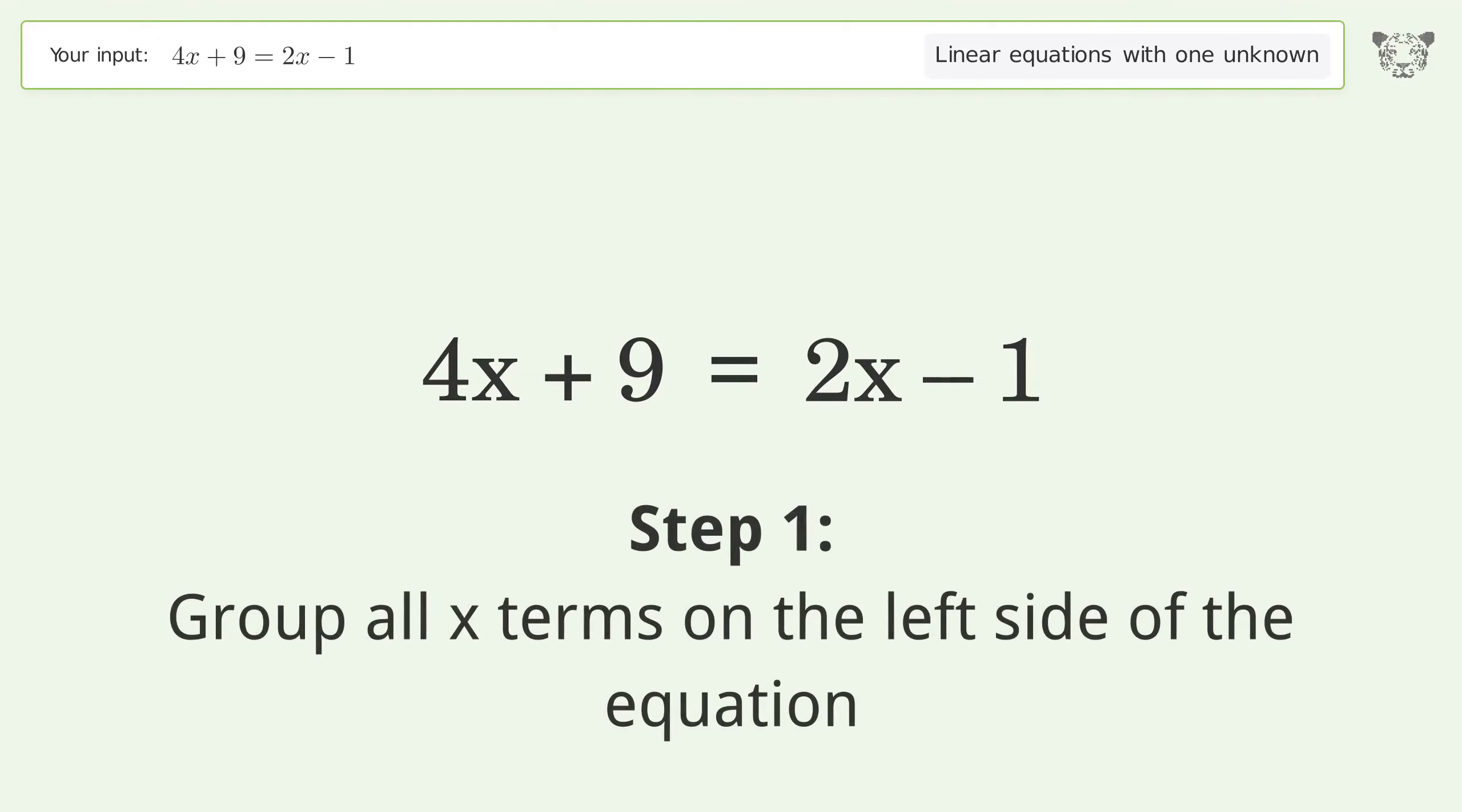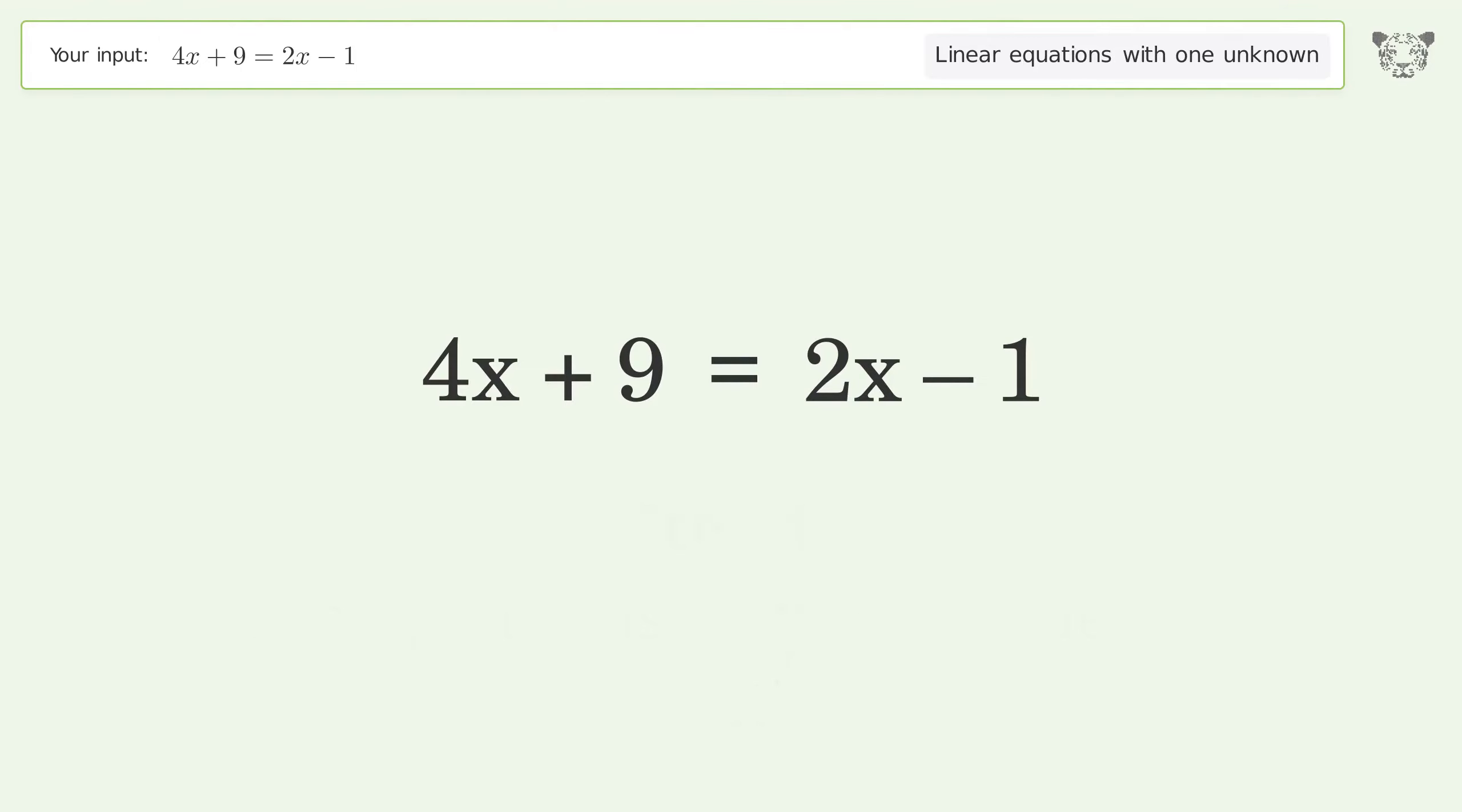Group all x terms on the left side of the equation. Subtract 2x from both sides. Group like terms. Simplify the arithmetic.